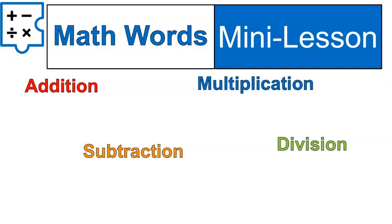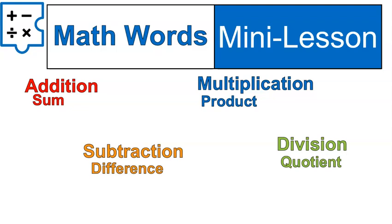There are math words for these different operations: addition, subtraction, multiplication, and division. Some common math words for addition are sum. When two numbers are added together, you get a sum. When two numbers are multiplied together, you get a product. And when two numbers are divided, it's called a quotient. And when two numbers are subtracted, it's called a difference. This is the result of doing these operations. There are some other words that we often use to mean these operations as well.